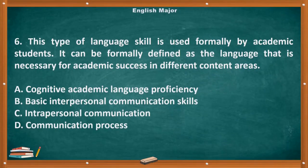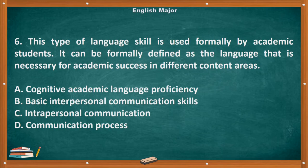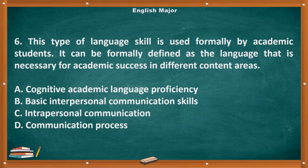Question number 6. This type of language skill is used formally by academic students. It can be formally defined as the language that is necessary for academic success in different content areas. A. Cognitive Academic Language Proficiency. B. Basic Interpersonal Communication Skills. C. Interpersonal Communication. D. Communication Process. The correct answer is letter A, Cognitive Academic Language Proficiency.